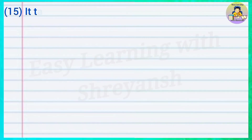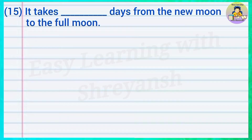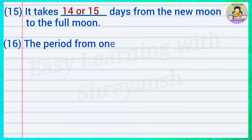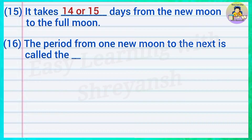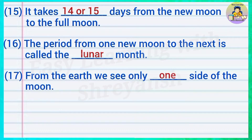Fifteen — it takes — days from the new moon to the full moon — answer: 14 or 15. Sixteen — the period from one new moon to the next is called the — month — answer: lunar. Seventeen — from the earth we see only — side of the moon — answer: one.